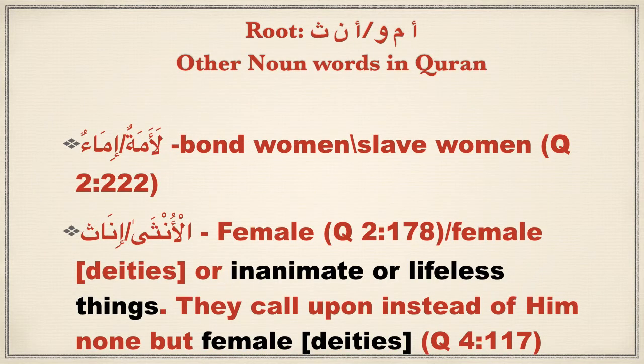Moving on to two other roots. The first word is amatun, to mean bond woman or slave woman, and its plural is ima-un, occurring only two times in the Quran. The next word, untha, is an important word because it means female. In the example verse shown, Allah says they call upon, instead of him, none but female deities. Others say this word could also be referring to calling upon lifeless beings.